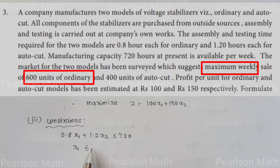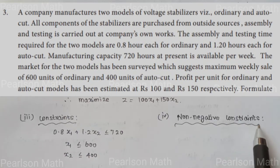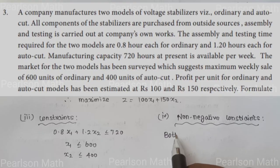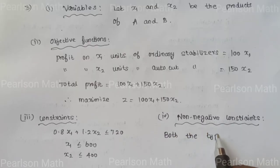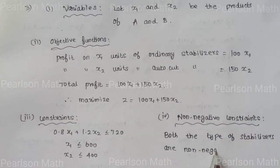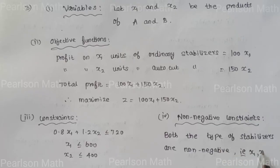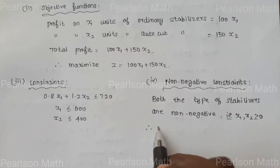The constraints are: assembly time gives 0.8X1 plus 1.2X2 less than or equal to 720. Market limit for ordinary: X1 less than or equal to 600. Market limit for auto cut: X2 less than or equal to 400. Non-negative constraint for both types of stabilizer: X1 and X2 greater than or equal to 0.